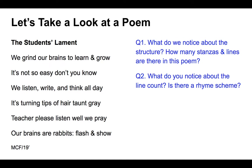We can see there's a pattern — the poet has taken time to make sure these lines follow eight syllables per line, or eight beats per line. We can anticipate that the final line will also have eight counts: 'Our brains are rabbits flash and show' — again, eight. So: one stanza, six lines, each line has eight beats, and the rhyme scheme is A A B B B A.